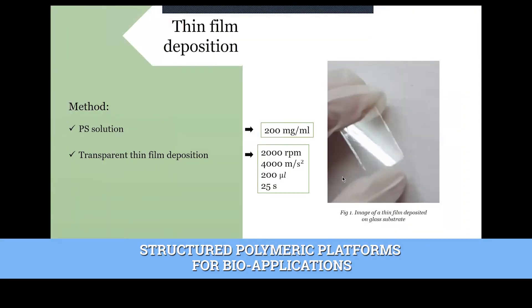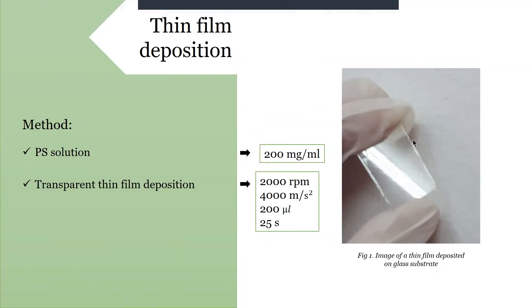Firstly, thin film deposition was done on a glass substrate previously exposed to a UV ozone treatment. For this we have used a solution of polystyrene dissolved in toluene with a concentration of 200 milligrams per milliliter. And this was deposited via spin casting on a glass solid substrate. This technique was employed in order to obtain a layer of polymer by rotating and spreading the specific material as you can see in the figure one. The result was a highly uniform transparent thin film.